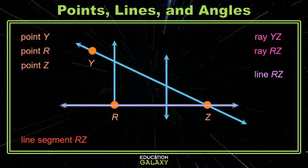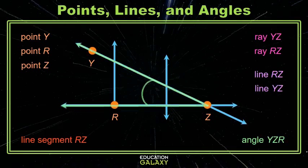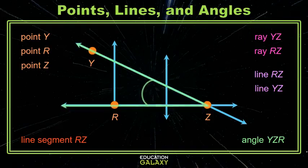I see lines — line RZ, line YZ. Can you identify an angle? Oh, there's one — angle YZR.